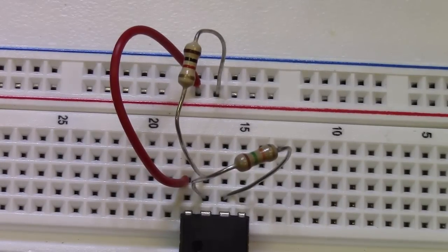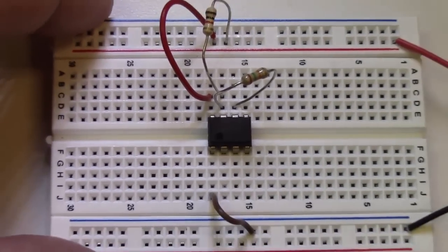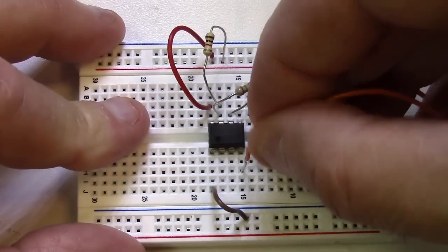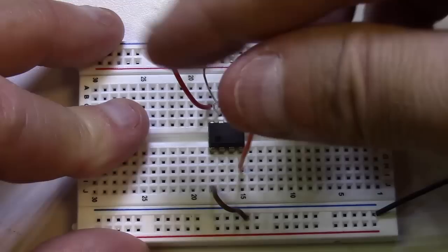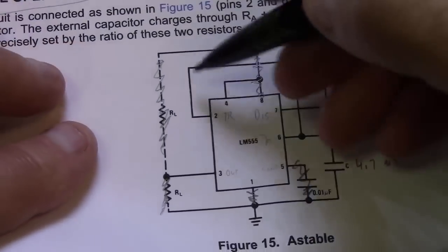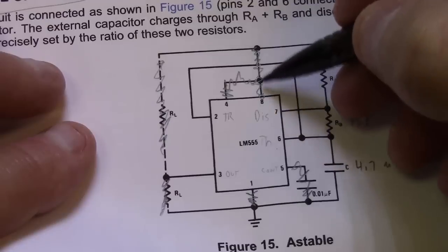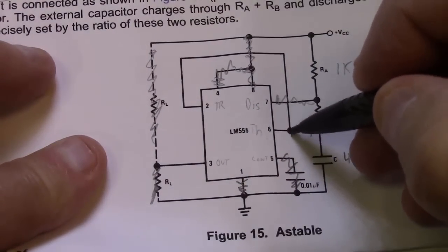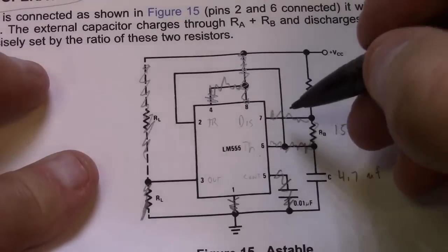Because pin four is our reset and that needs to go to V plus all the time unless you're going to be using the reset, which is usually not very often. So four is going to go to V plus here. Now we can cross these things off our list. We've got four going to V plus through eight, we have seven and six hooked together through our 15K resistor, and we have seven going to V plus through our 1K resistor.